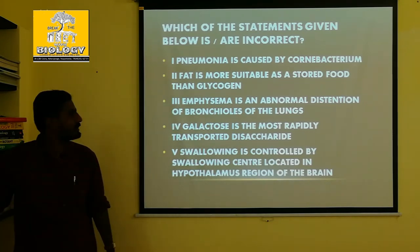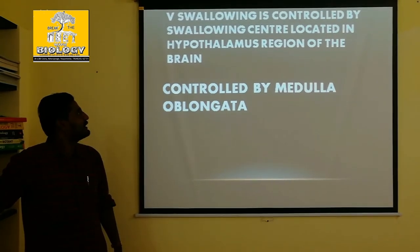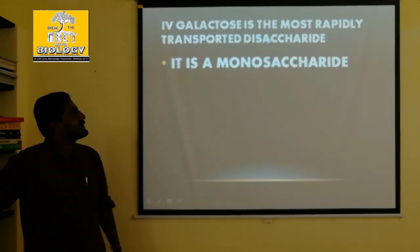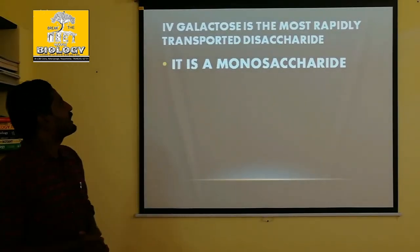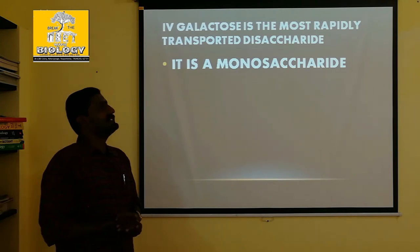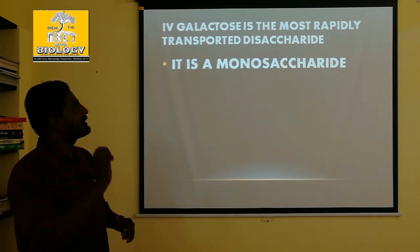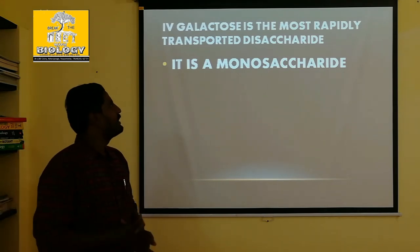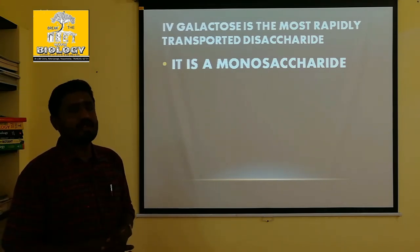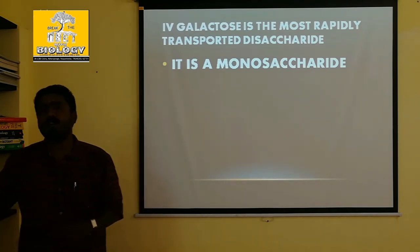Galactose is a type of carbohydrate. It is a monosaccharide, not a disaccharide. The statement says galactose is the most rapidly transported disaccharide — but galactose is actually a monosaccharide that is rapidly transported. This statement is wrong.